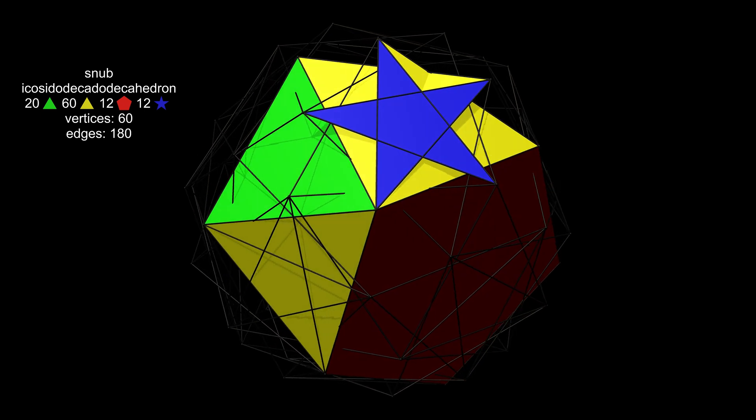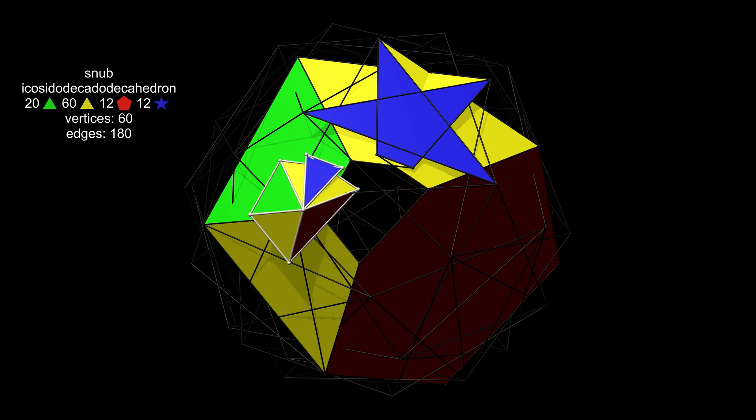If we walk clockwise around the vertex, we cross a pentagon, a snub triangle, a triangle, and a snub triangle. But when we cross the pentagram, we're actually going anti-clockwise, before finally going clockwise across the last snub triangle. The pentagram is reversed or upside down.